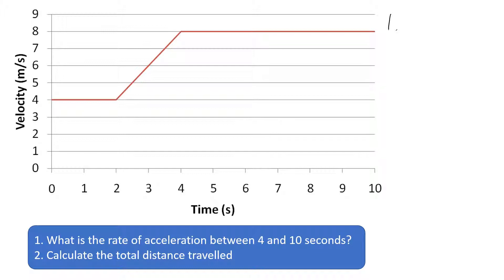Question one: what's the rate of acceleration between 4 and 10 seconds? There is no change in velocity, so the acceleration is equal to zero metres per second squared — there's no acceleration. The speed remains the same; the velocity remains the same.